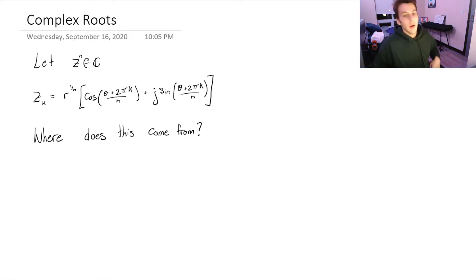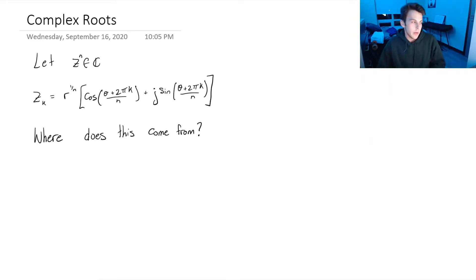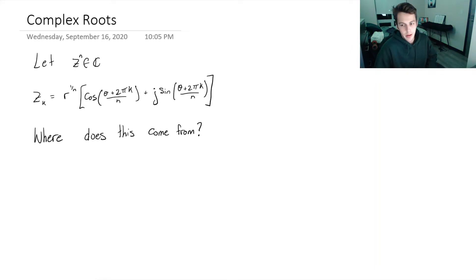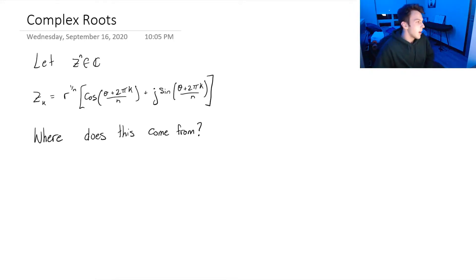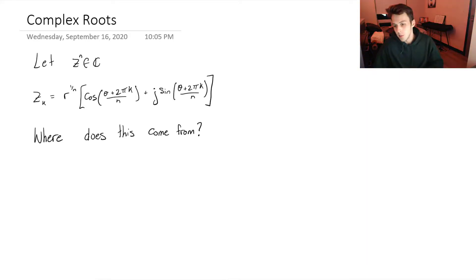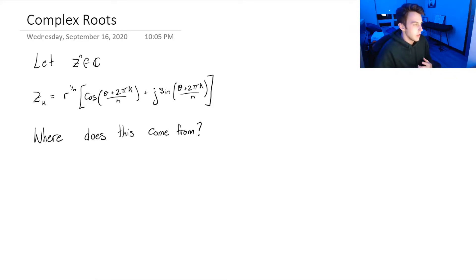Hey, what's up guys? So I've been getting a lot of questions recently about where the nth roots formula comes from. Because looking at it, it's not the most intuitive — it's easy to just blindly plug in your values and get the answer. So I'm going to try to explain it with an easy example. Hopefully when you're applying this formula in the future, you'll understand where it comes from, which is honestly super beneficial, especially when linear algebra gets more challenging.